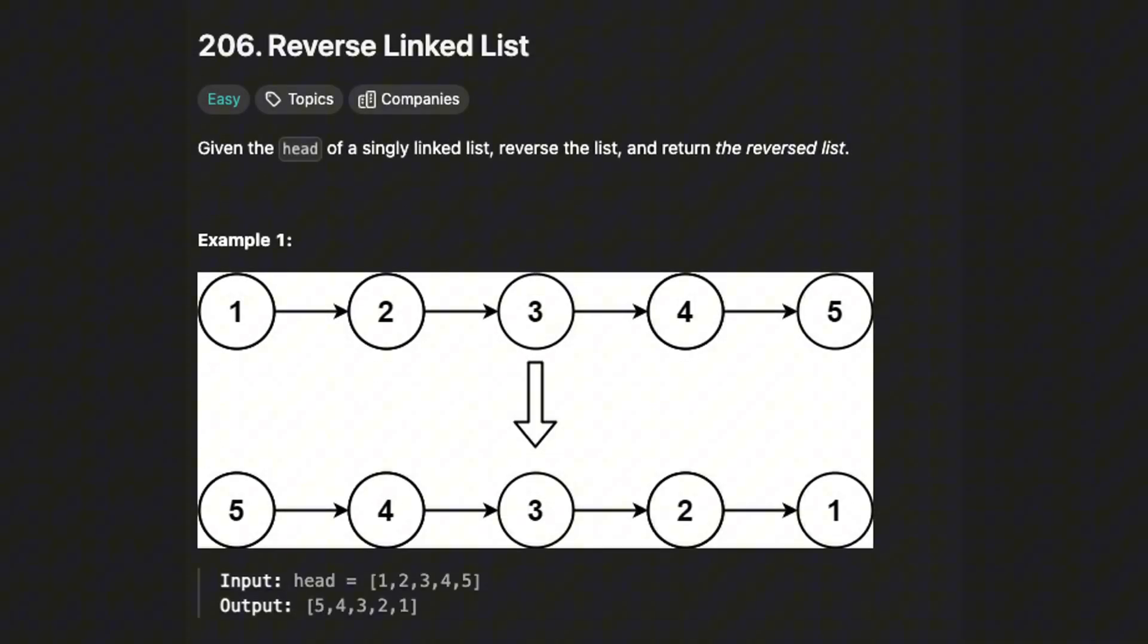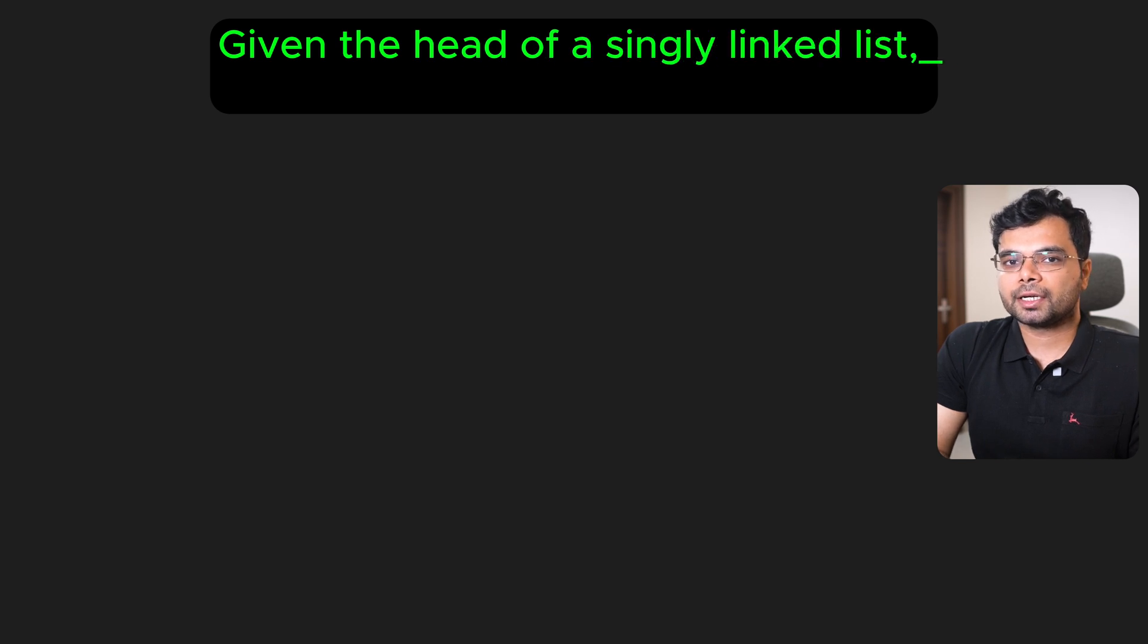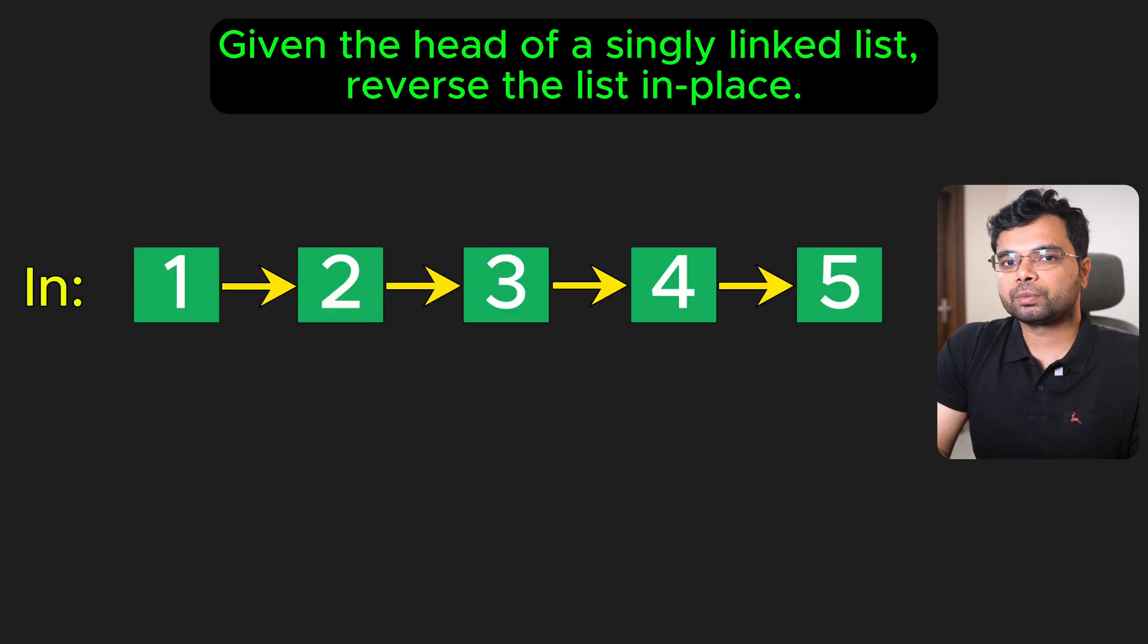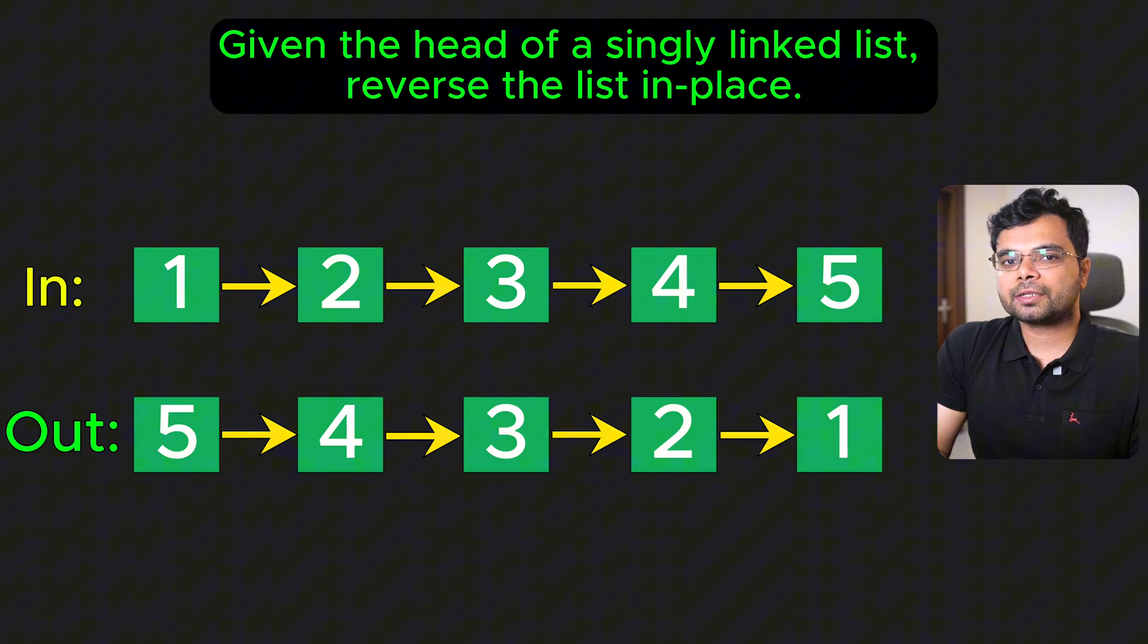LeetCode 206: Reverse Linked List. You are given the head of a singly linked list and your task is to reverse the list in place. For example, if the input list is this, the output would look like this. Reversing the list means flipping the direction of each pointer so that every node points